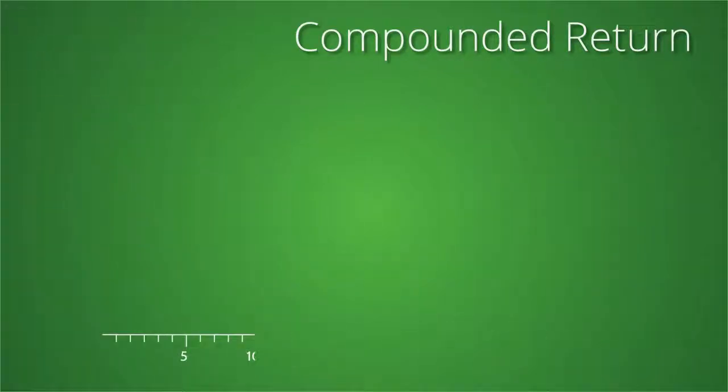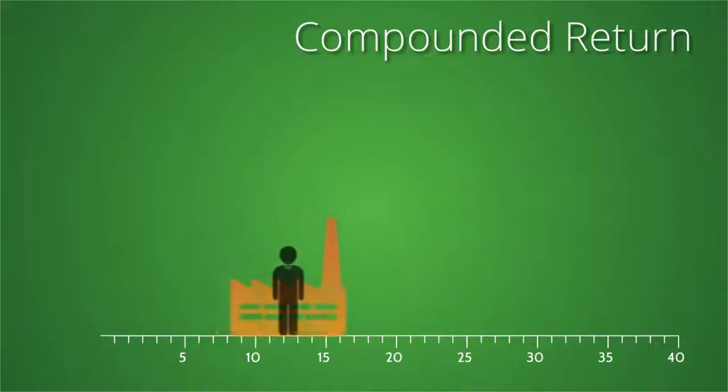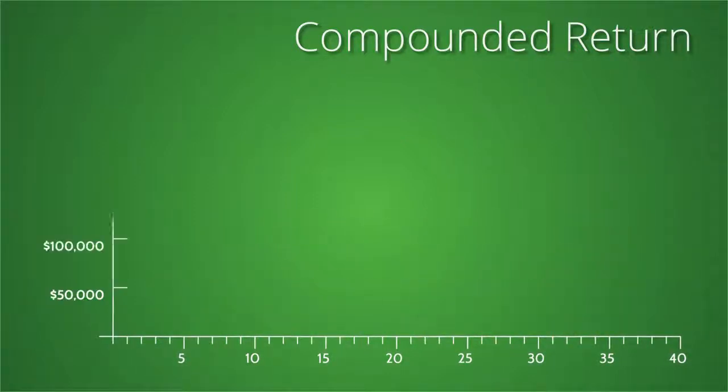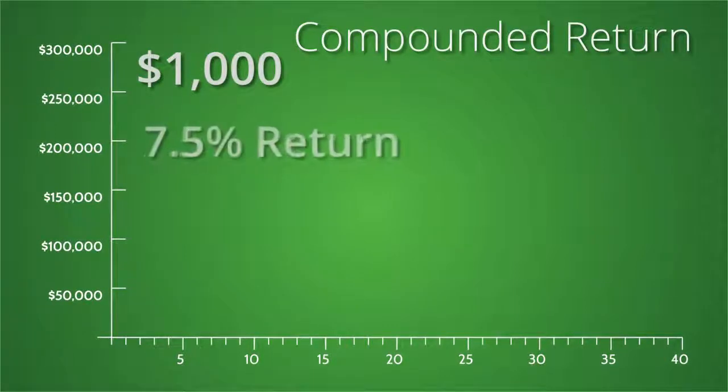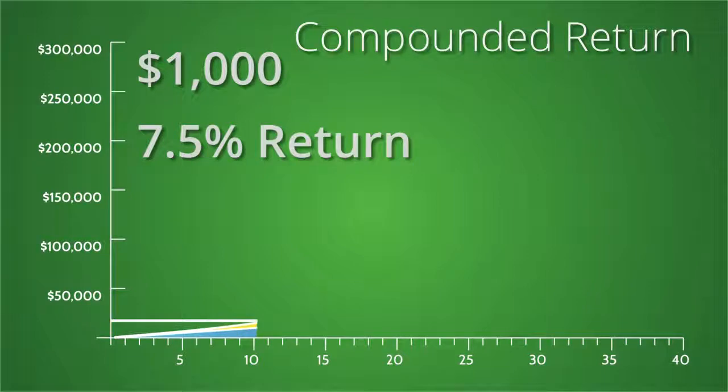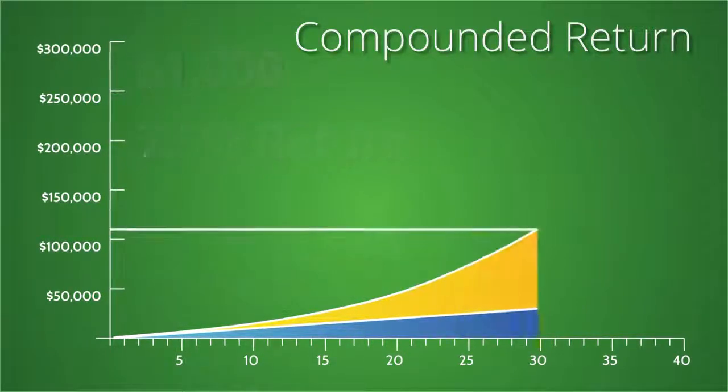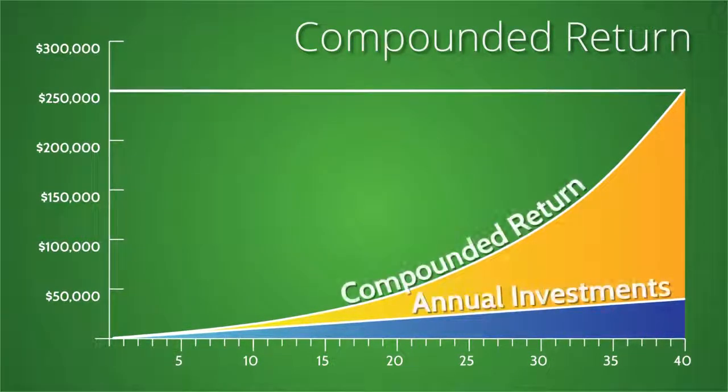The advantage of compounding becomes really significant over longer periods of time, such as a 401k participant's working career. Let's look at the growth that is possible for an annual investment of $1,000 earning 7.5% over 10, 20, 30, and 40 years. Not bad.